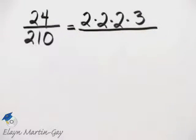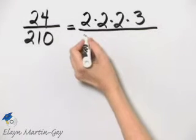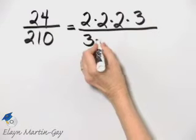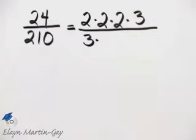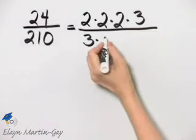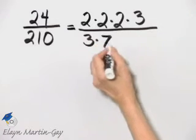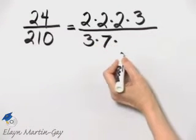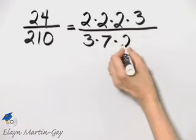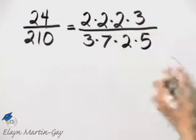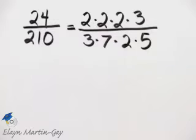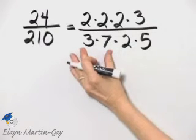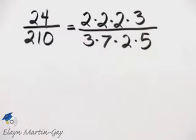Now let's write the prime factorization of 210. I know 3 divides into 210 70 times. What is 70? 70 is 7 times 10, and 10 is 2 times 5. Double check, but notice this is 21 times 10, and 21 times 10 is certainly 210.